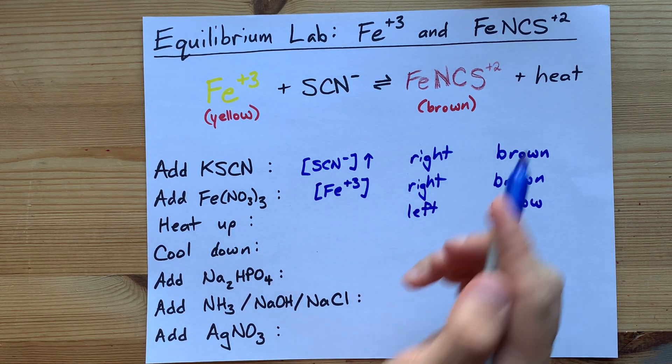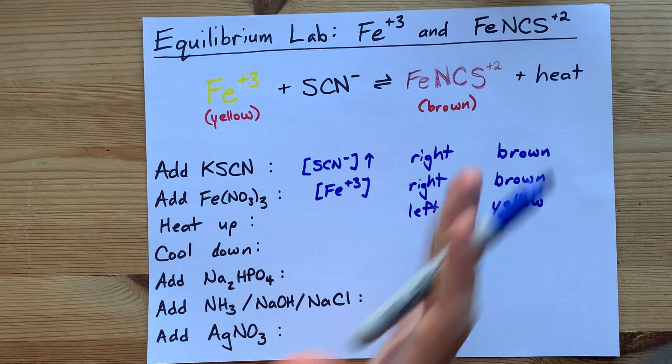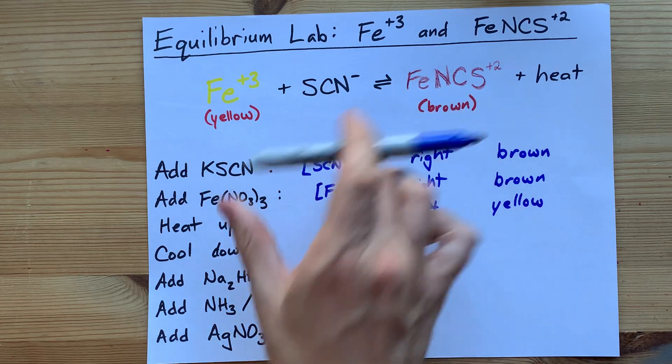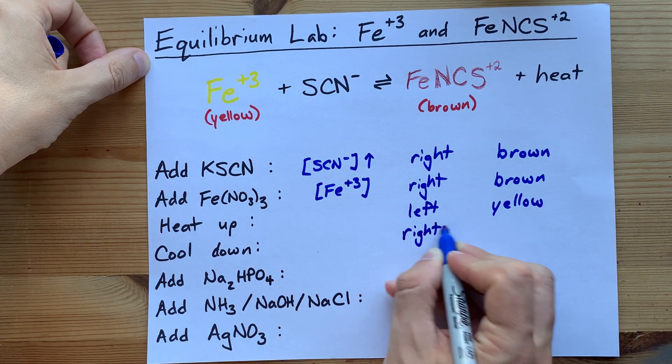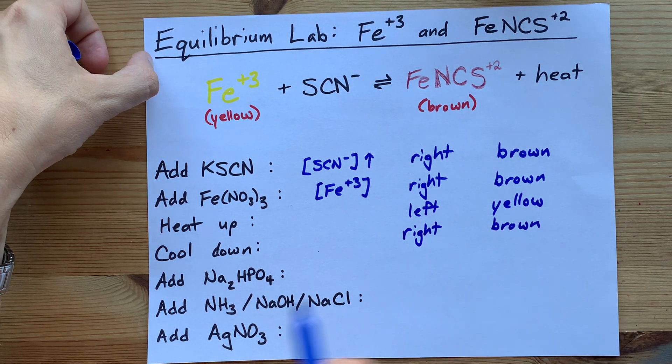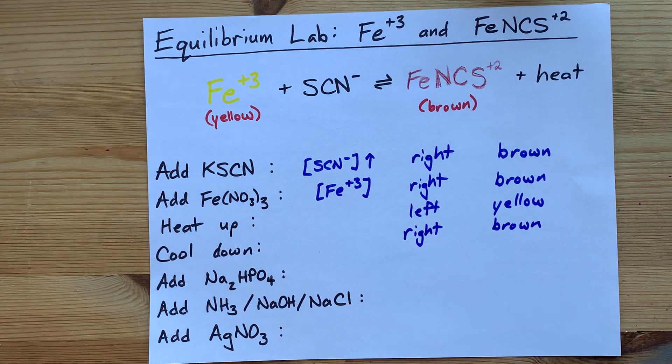Cooling down is the opposite. It's removing some of the heat. So the reaction, by Le Chatelier's principle, will react to try to replace some of it. It will shift slightly to the right, and the solution will turn brown. Note that these two are opposites, because heating up and cooling down are also opposites.